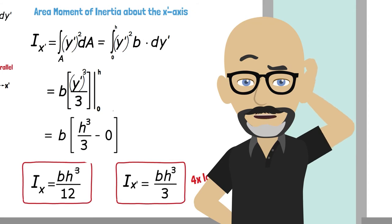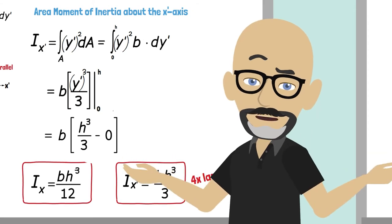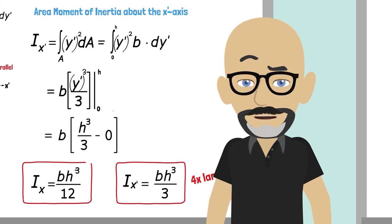I see you notice that Ix' is 4 times larger than Ix, but you determine that by performing the integral again. Don't you recognize that there was an easier way to calculate Ix' if you already know Ix? But I calculated the integral. Isn't Ix' just the integral of y' squared dA? How could that be easier?